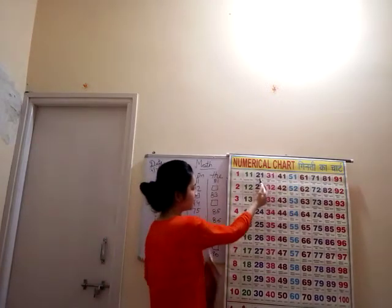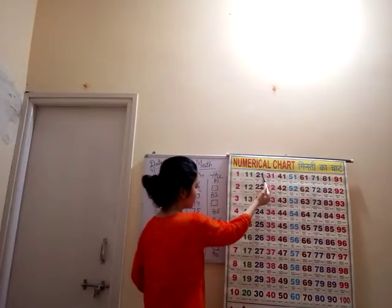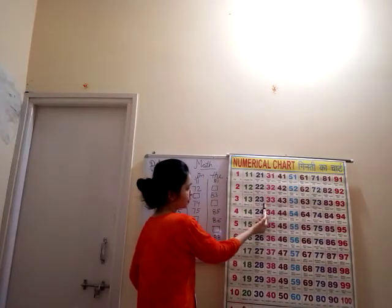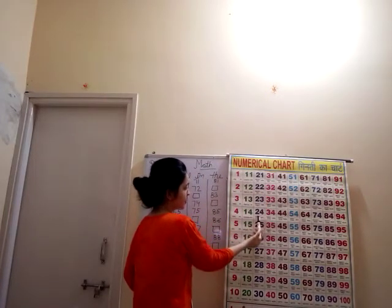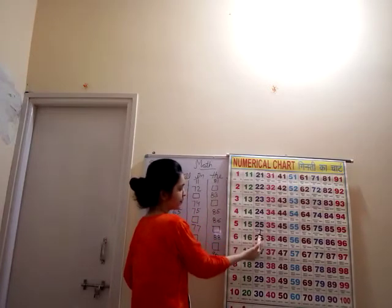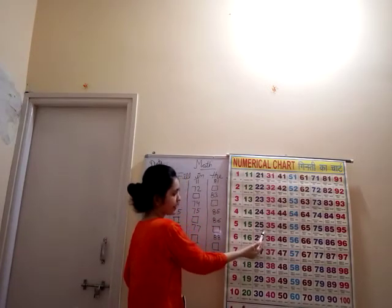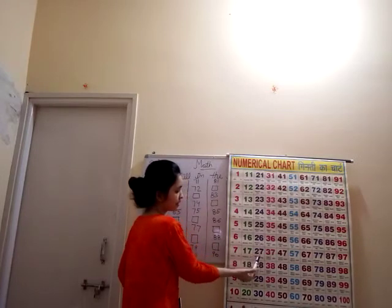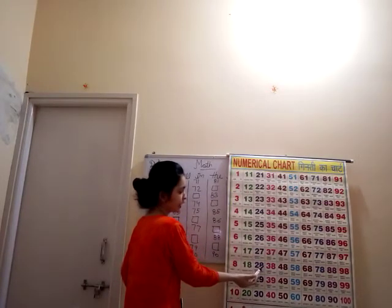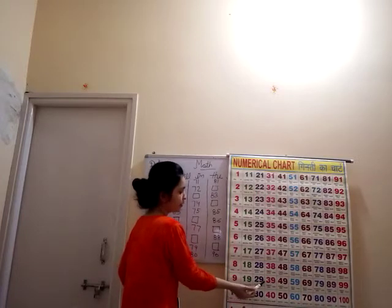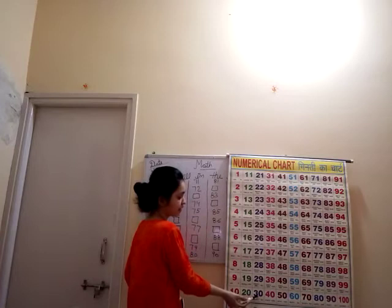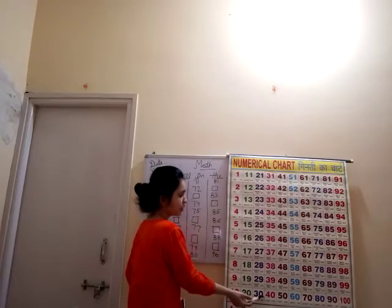20 ke bad? 2, 1, 21. 2, 2, 22. 2, 3, 23. 2, 4, 24. 2, 5, 25. 2, 6, 26. 2, 7, 27. 2, 8, 28. 2, 9, 29. 29 ke bad kya atar? 3, 0, 30.